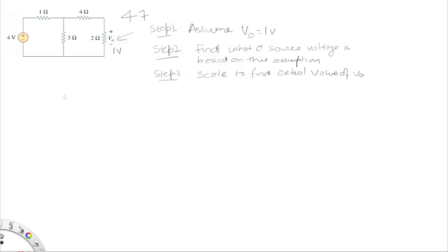So the way I'm going to proceed is we assume V naught is 1 volt. Now that gives us a current in this path which is I naught. So I naught is V naught by 2, which is the current through this element, which happens to be 1 by 2, which is 0.5 amps.